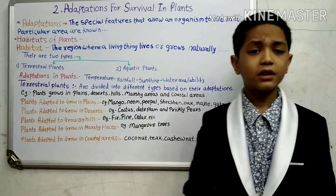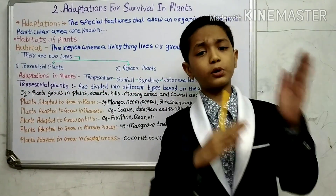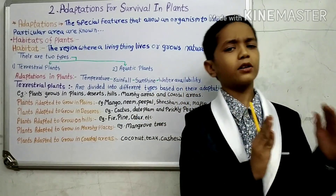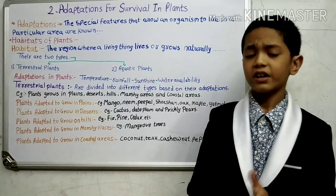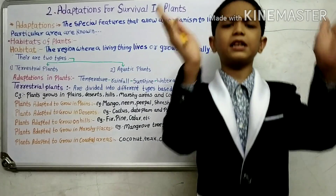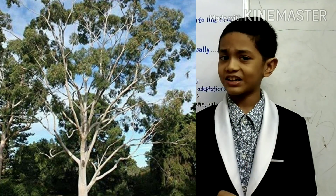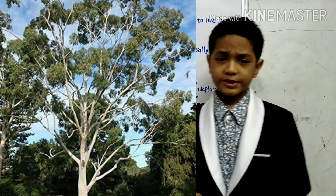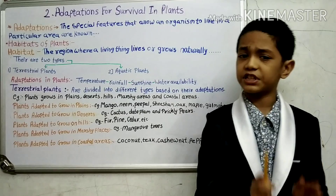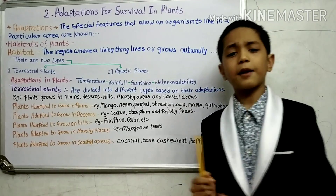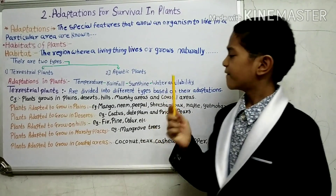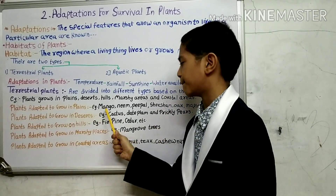The plants that grow in plains have many branches and many leaves. They shed their leaves in autumn and grow new leaves in spring.